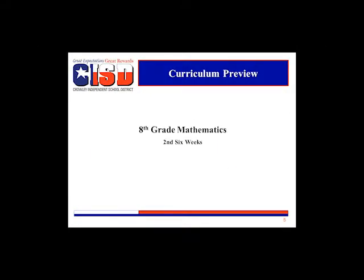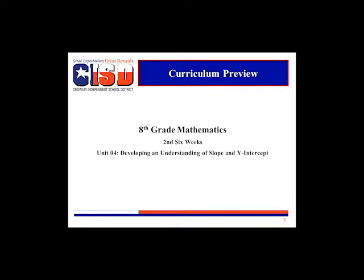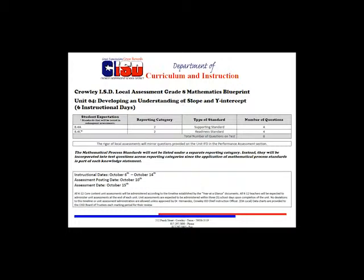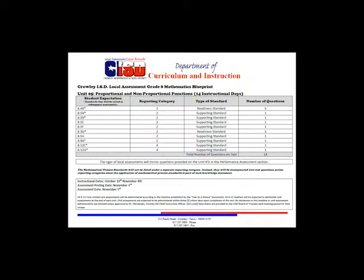Units covered in the second six weeks are Unit 4, Developing an Understanding of Slope and Y-Intercept, and Unit 5, Proportional and Non-Proportional Functions. Please pause the video to review the Unit 4 local assessment blueprint, taking note of the instructional days and assessment posting and administration dates. Now take a moment to review the Unit 5 local assessment blueprint.